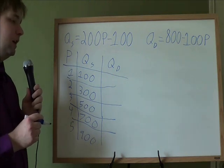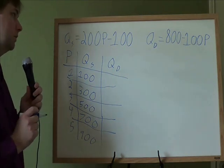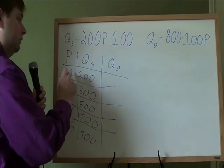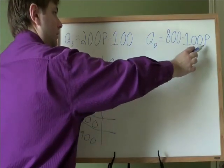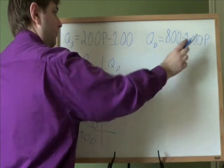So then we'll go and find the quantity demanded. How many apples do people want to buy at these different prices? We do it about the same way. We take each of these different P's and plug them into the P on the demand formula.